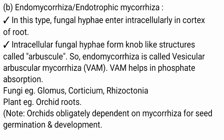Endomycorrhizae, or endotrophic mycorrhizae: in this type, fungal hyphae enter intracellularly into the cortex of the root. The intracellular fungal hyphae form knob-like structures called arbuscules. Therefore, endomycorrhizae are called vesicular arbuscular mycorrhizae (VAM). VAM helps in phosphate absorption.